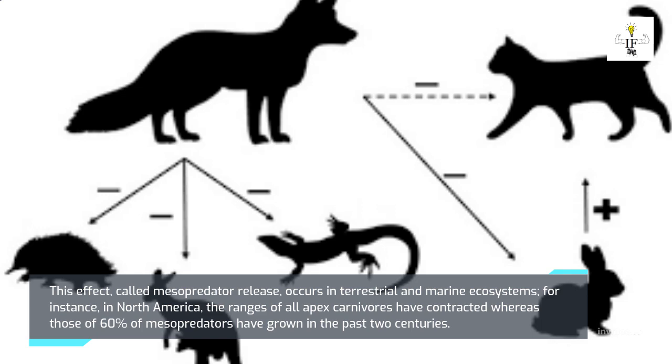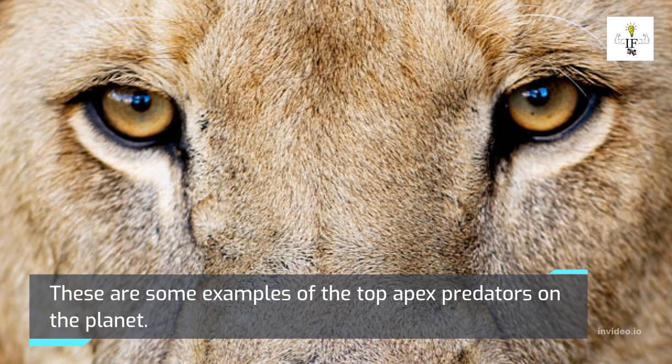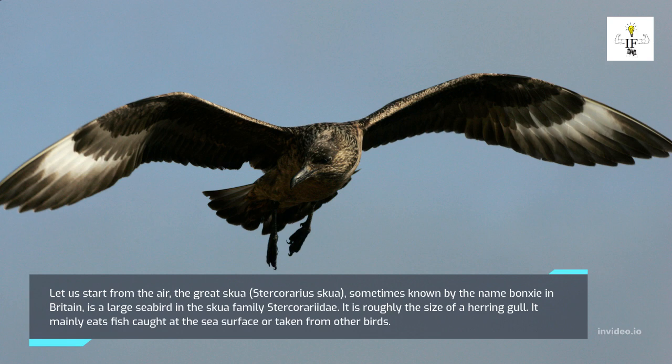These are some examples of the top apex predators on the planet. Starting from the air: the great skua, Stercorarius skua, sometimes known as the bonxie in Britain, is a large seabird in the family Stercorariidae, roughly the size of a herring gull. It mainly eats fish caught at the sea surface or taken from other birds.